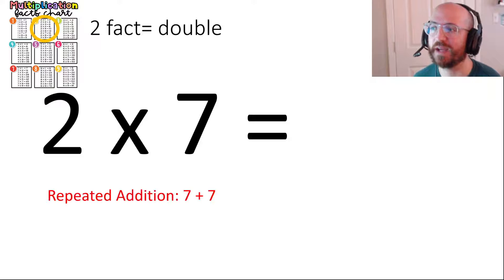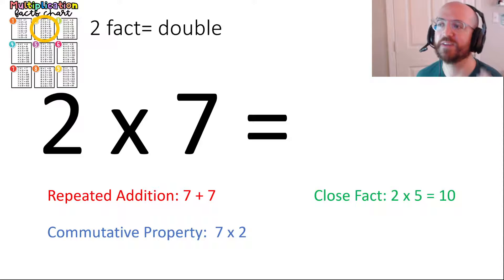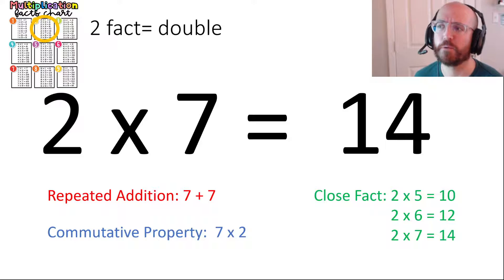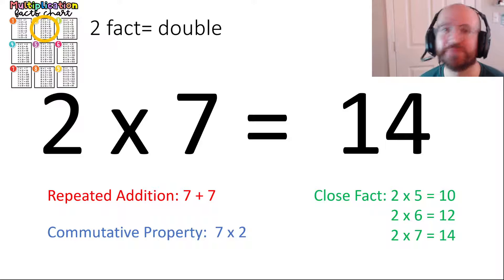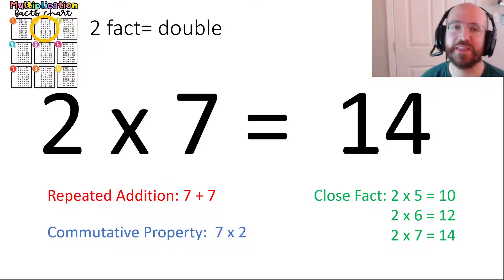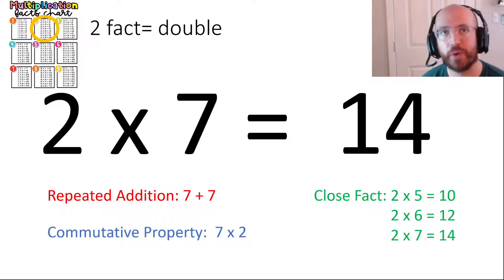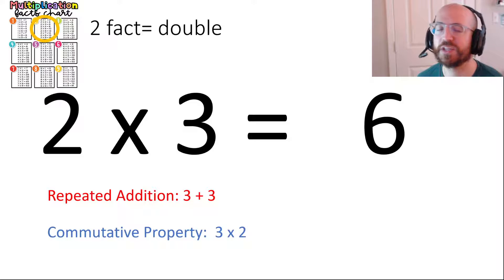Do you know two times seven? Well that's the same as seven plus seven, and if you know two times seven you also know seven times two. If you know two times five is ten, two times six would be twelve, so two times seven would be fourteen. To know two times seven, I don't think you should skip count from two, four, six, eight, ten, twelve, fourteen. I think it would be better to just start at a fact you know well - two times five is ten, twelve, and then fourteen. Two times three is the same as three plus three, which equals six.